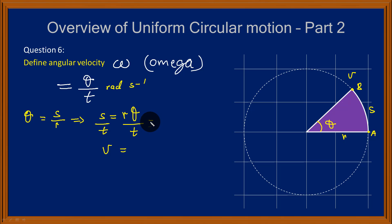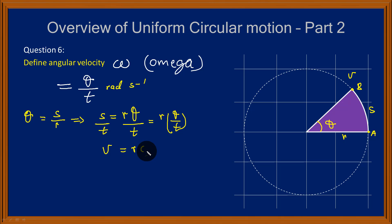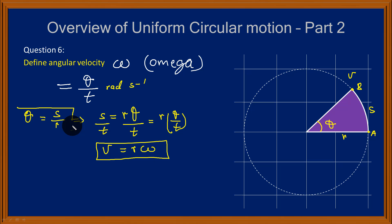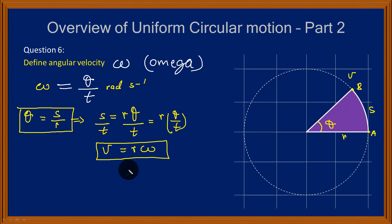On the right-hand side, we can separate the equation so that we have theta over T — which is omega — separate from R, giving us v equals R omega. So we now have an equation which connects angular velocity and linear velocity.